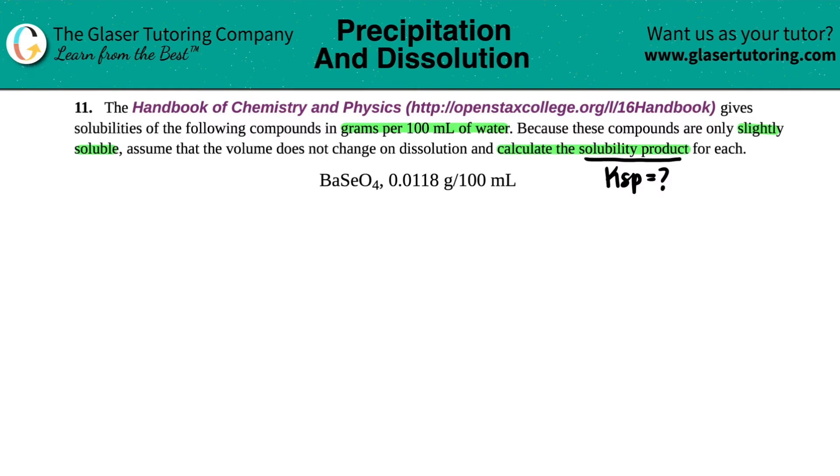Now, if this is undergoing dissolution, which means that this is dissolving into its aqueous ions, this starts off as a solid. It's an ionic compound. So I have BaSeO4. And it's a Ksp that we're trying to solve for. So it's at equilibrium. And it's going to be at equilibrium with its two ions. But the question is, what are these two ions?